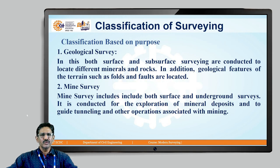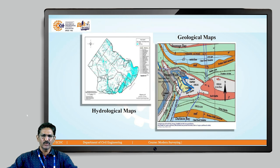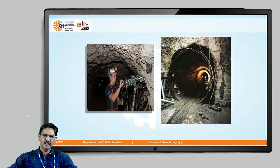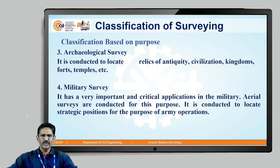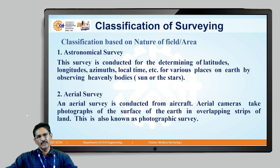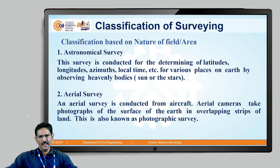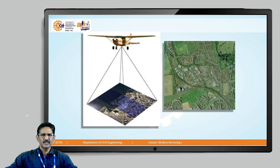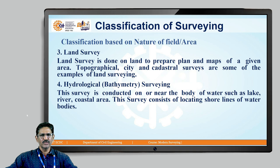Based on purpose, surveying is used for geological ground surfaces, mine survey to explore different mines and ores, hydrological maps of rivers and lakes, tunnel survey, archaeological survey to find relics of antiquity, antique forts and temples, or military purposes. Based on the nature of the field: astronomical survey calculates latitude and longitude using the sun and stars; aerial survey is taken from aircraft; hydrological or bathymetric survey is taken from water; and topographical, cadastral or city surveys are conducted from land.